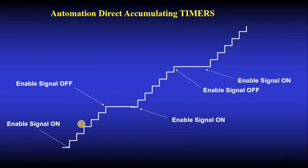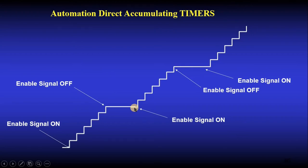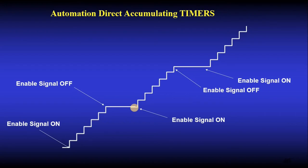A practical use of the accumulating timer: if a pump is running, the timer counts how many seconds it has run. When the pump stops, the timer holds its value. You can combine this with a counter — each time the timer reaches one minute (60 seconds), a counter increments by one, giving you total hours the pump has been running.